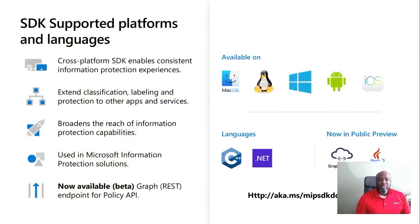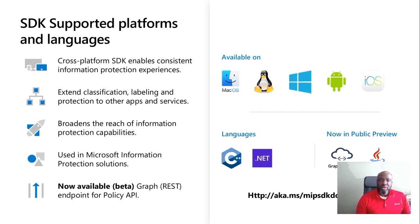The Microsoft Information Protection Software Development Kit falls under the Protect Your Data principle. This principle covers encryption, visual markings, and access restriction. The Software Development Kit gives developers the ability to extend labeling and protection services to third-party applications and services. The SDK is supported on all versions of Windows, Mac OS, and iOS.